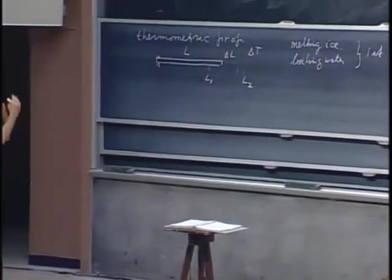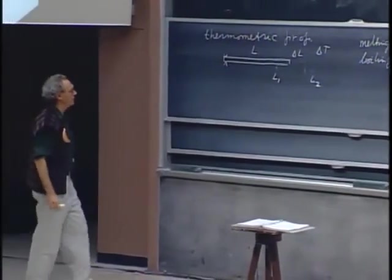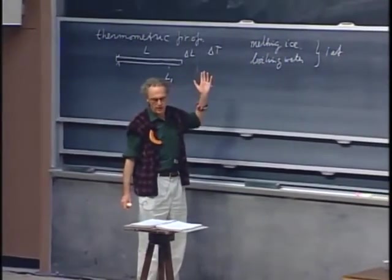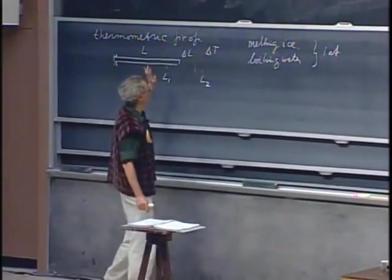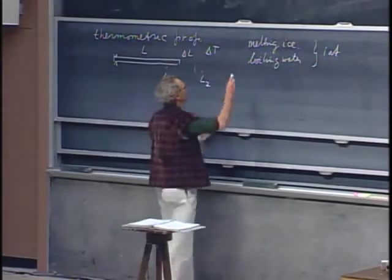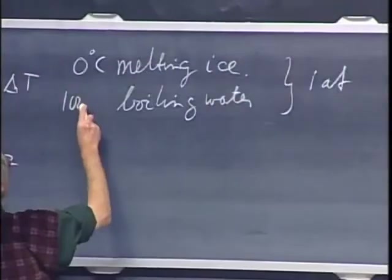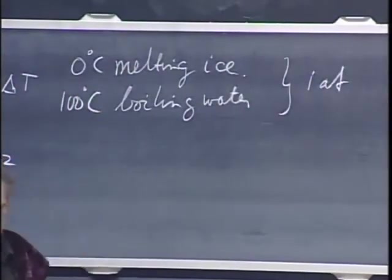And those are my reference points for my temperature scale. Celsius did just that, the idea that he used melting ice, which is now called zero degrees centigrade, and he used boiling point of water, which was his hundred degrees centigrade.